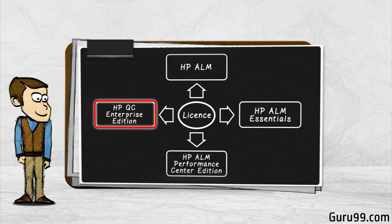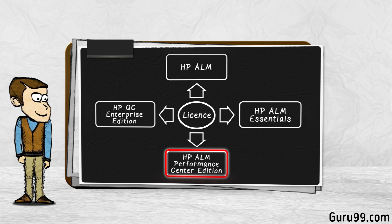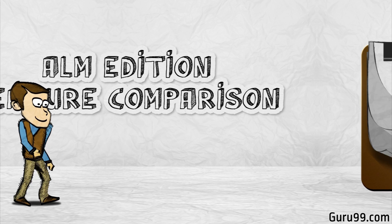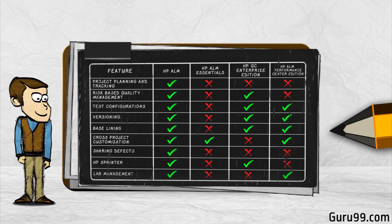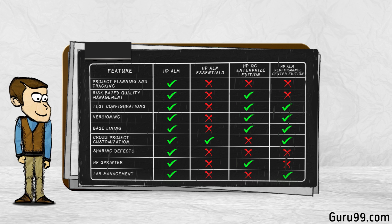HP QC Enterprise Edition is a license suited for corporations who would like to use ALM exclusively for testing purposes. It also provides integration with Unified Functional Tester. HP ALM Performance Center Edition best suits organizations who would like to use HP ALM to drive HP LoadRunner scripts. It helps the user to maintain, manage, schedule, execute, and monitor performance tests.